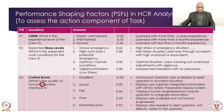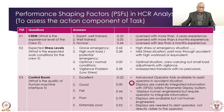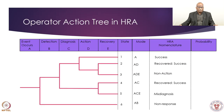We will see one exercise shortly so we can better appreciate this. Now, before the problem, let us see what the Operator Action Tree in HRA is. This is a very useful graphical technique where some event has occurred, and the chronological sequence is: detection, then diagnosis, then action, and recovery if there is some deviation.